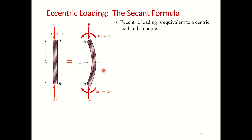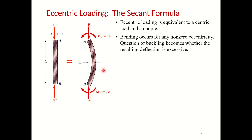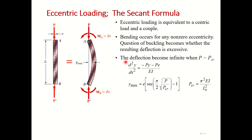The stress we calculate for eccentric loading will be less than the critical stress compared to centric loading. From our last derivation, we had d²y/dx² = −Py/EI, but here we also have an additional moment due to eccentric loading equal to −Pe. When we derive this, we get the equation for maximum deflection which is equal to eccentricity times [secant(π/2 · √(P/P_critical)) − 1], where P_critical equals π²EI over Le².